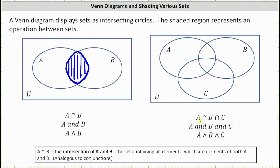On the right, we have the intersection of sets A, B, and C, or A intersect B intersect C, which we can also read as A and B and C. This is a set containing the elements that are in A and B and C, which is this overlapping region here that is in all three sets.